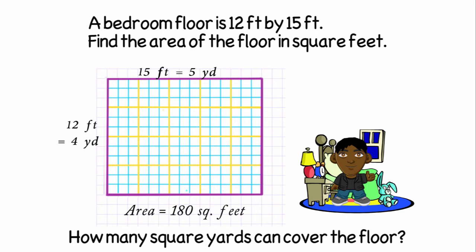So now it looks like I have four rows and each row has five square yards in it. So five rows of four would be the equivalent of five times four, which equals 20, which is 20 square yards.